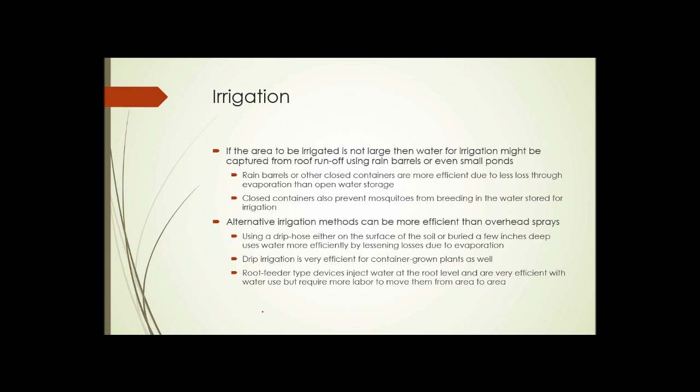And then alternative irrigation methods can be more efficient than overhead sprays. Traditional irrigation methods in large-scale farming use typically large sprinklers that may stretch for hundreds and hundreds of feet and are driven in a circle around a central pump area. And much of that water evaporates before getting to the soil and being used. Using something like a drip hose laying on the surface of the soil or buried a couple of inches deep uses water more efficiently because more of the water gets into the soil, less is lost due to evaporation. Drip irrigation is very efficient for container-grown plants as well. And root feeder-type devices inject the water at the root level and are very efficient with the use of water but require more labor to move them from area to area.